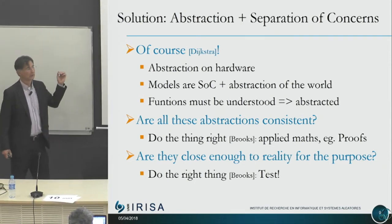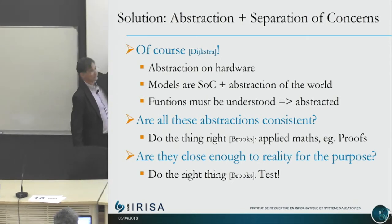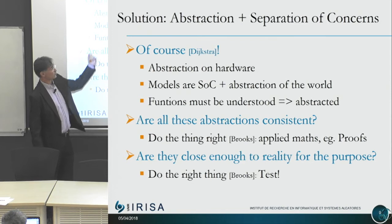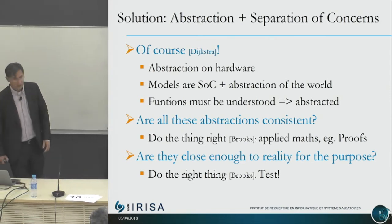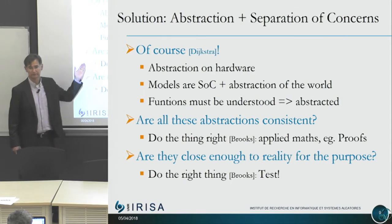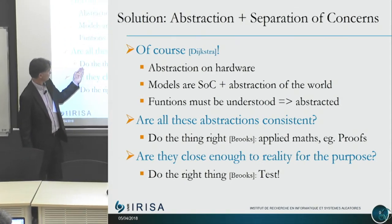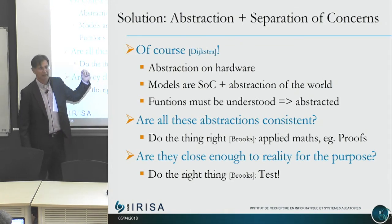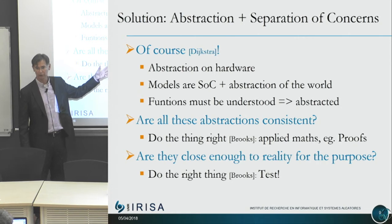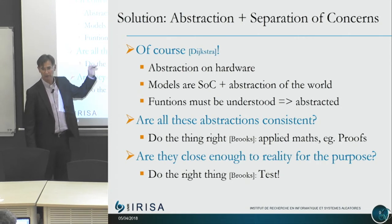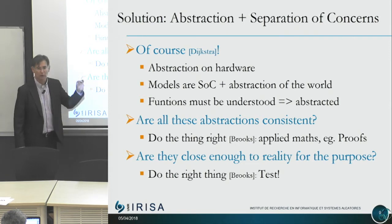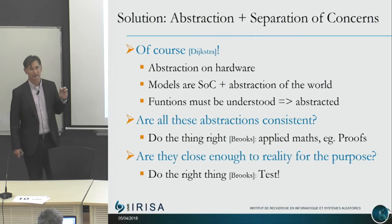We need abstraction on hardware, abstraction on models, and function must be understood abstractly. There are two very different problems. One is: are all these abstractions consistent? — what Brooks called 'do the thing right.' For that, you apply math proofs and formal methods. But the other side is: does it do the right thing? — is it close enough to reality for the purpose you're trying to pursue? That can only be checked through testing.